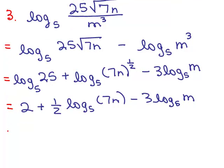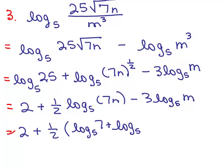Okay. All righty, well, I can't simplify 2 any further, so I have 2. Now, what am I going to do with this? I've got a product, 7 times n. So now I could break that up. So I have 1 half, and I could write that as a sum. The log base 5 of 7, plus the log base 5 of n, minus this 3 log base 5 of m.